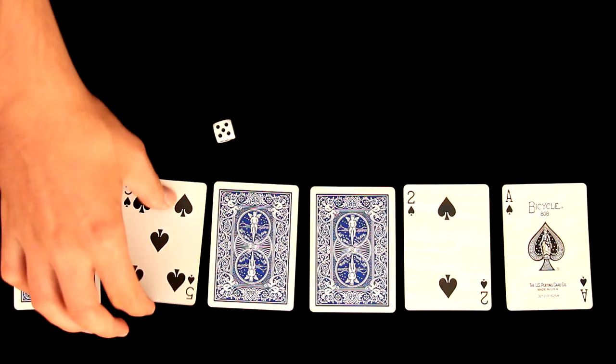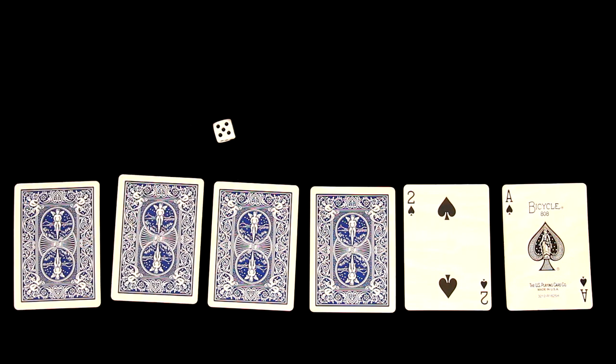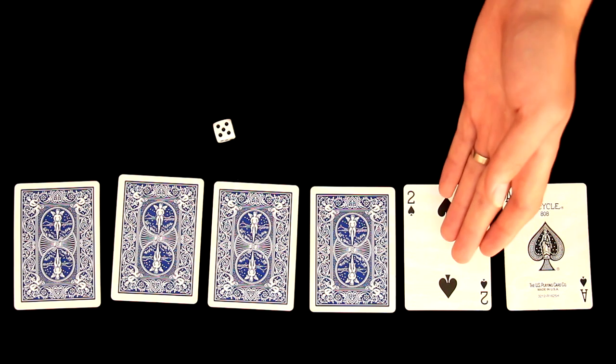Next is number five, we will turn over five. So we have only two cards left, number one which is the ace and number two.